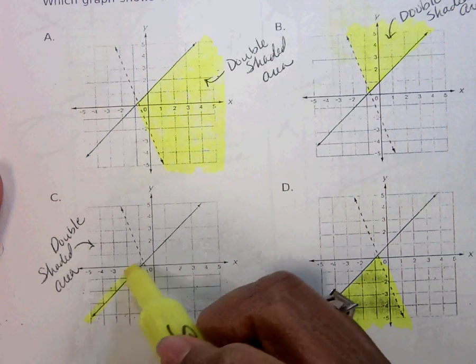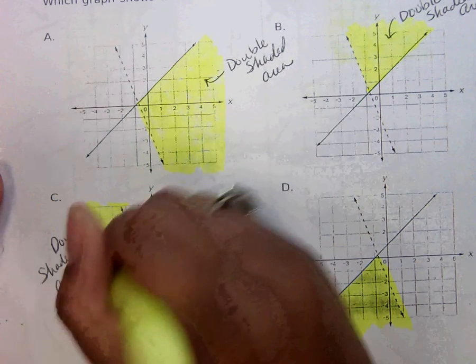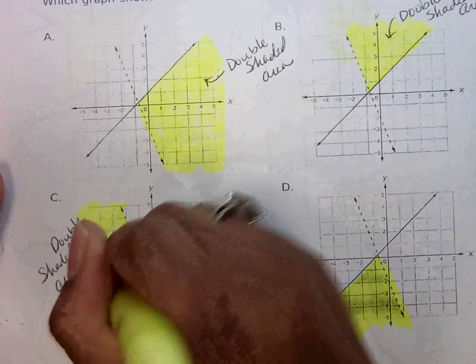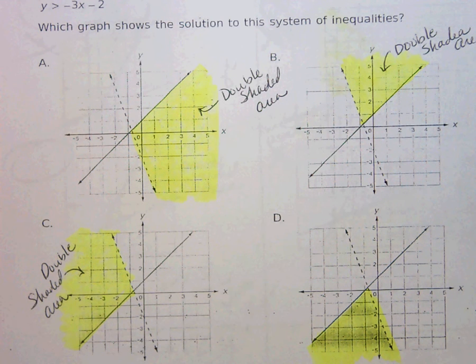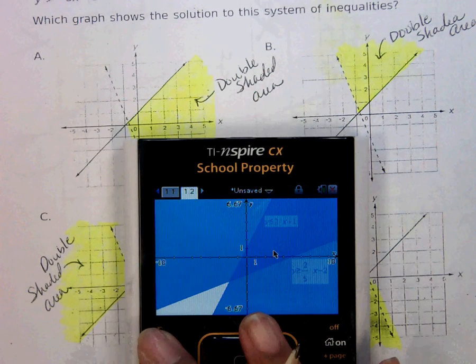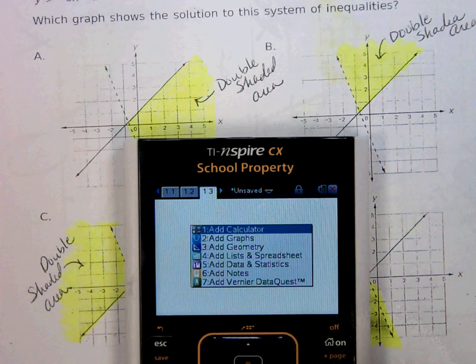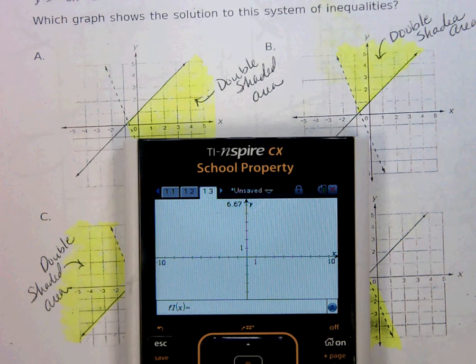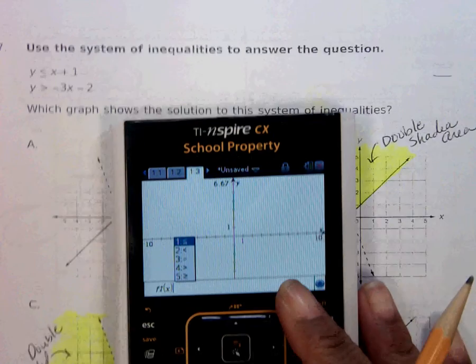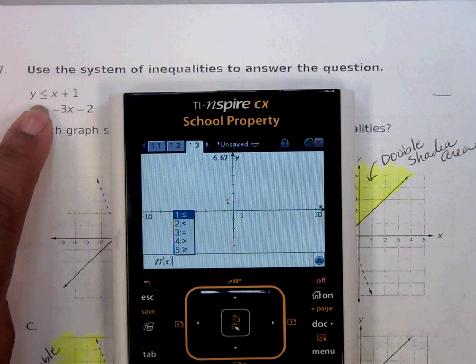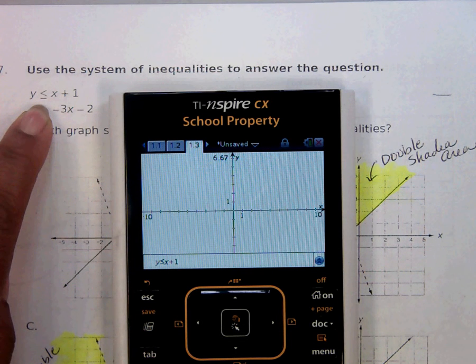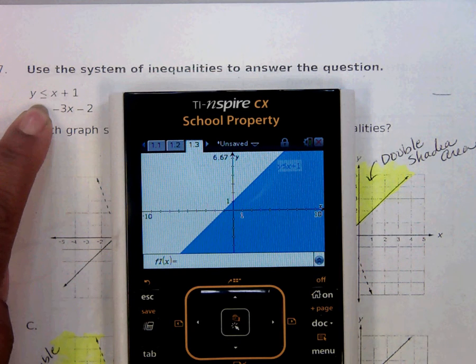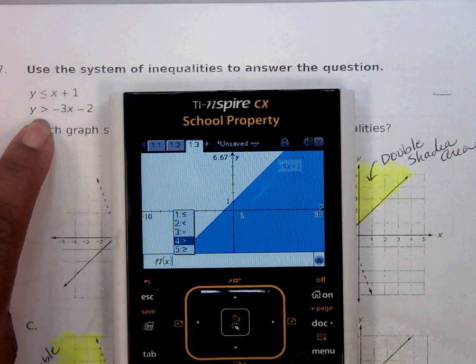And then double shaded area here. Calculator. Okay, so delete off the equal sign and we need x plus one. That we need it to be less than or equal to. So number one there, x plus one. Press the down arrow, takes me to the next one. Delete the equal sign. Put a gray event sign so it will be dashed.